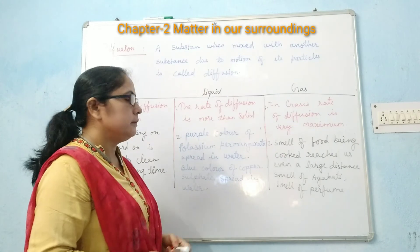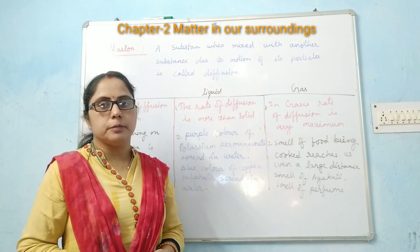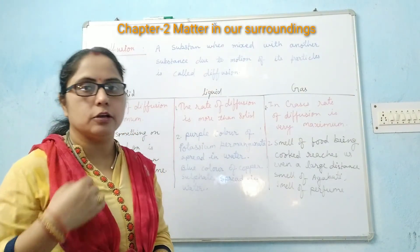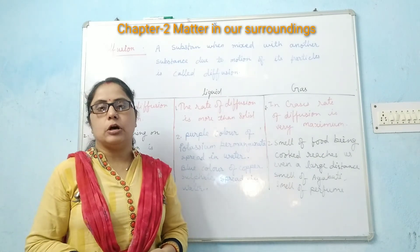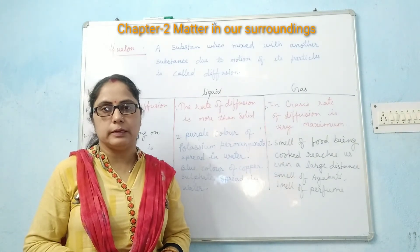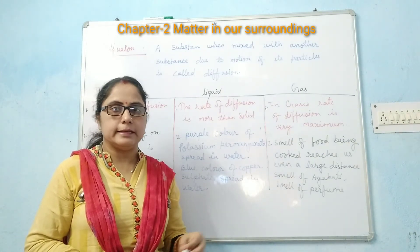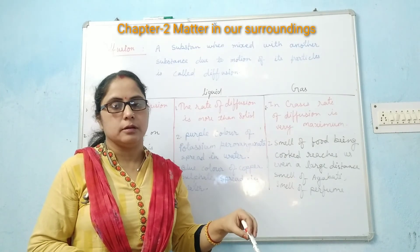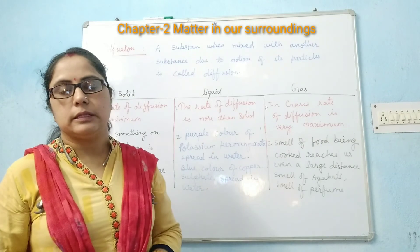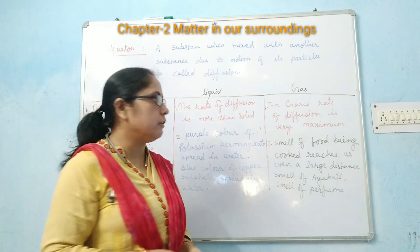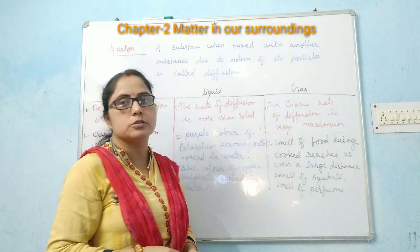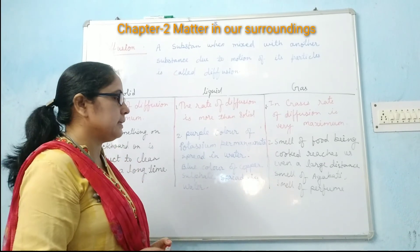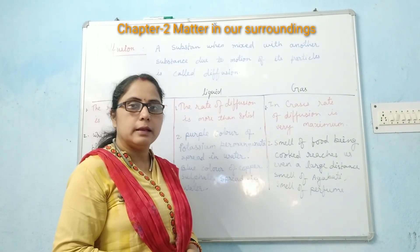The diffusion process can also be seen in liquids. When copper sulphate, which has a blue color, is mixed in water, it spreads its blue color throughout the water. Similarly, the purple color of potassium permanganate also spreads in the water. These are examples of diffusion in liquid.